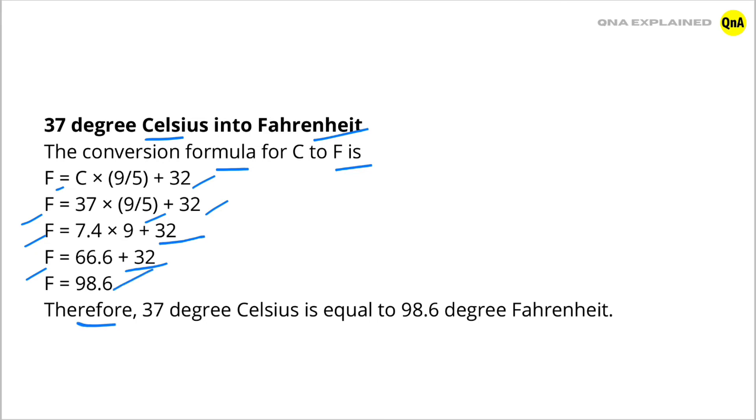Therefore, 37 degrees Celsius is equal to 98.6 degrees Fahrenheit.